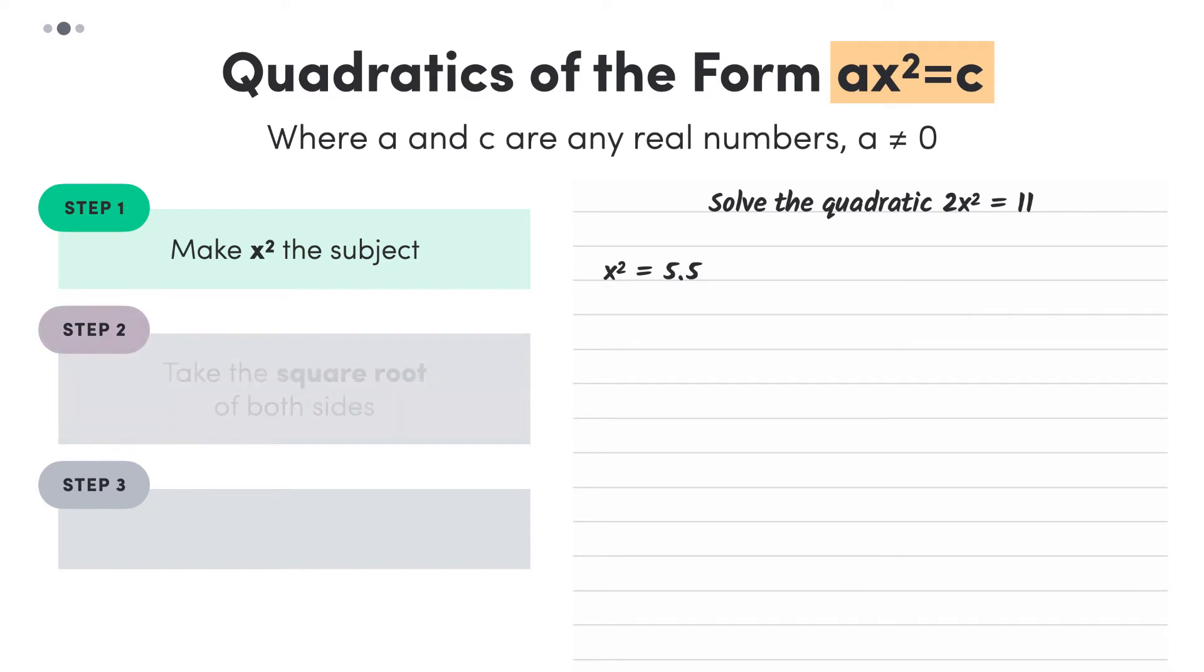Next we take the square root of both sides. This cancels out the power of 2 on the left, and on the right we have the square root of 5.5. Now, when we take the square root of a number, we need to write a plus minus sign out the front like so. This is because the square root of 5.5 can be either positive or negative.